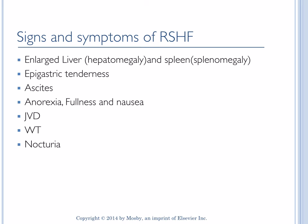JVD — jugular venous distension — occurs because blood backs up from the right side of the heart into the venous system and cannot empty into the right atrium, so it backs up into the jugular veins. There is also weight gain from fluid retention, and it is the nurse's responsibility to ensure daily weights are recorded. Nocturia occurs because of nocturnal fluid redistribution and reabsorption in the body during the night, causing the urge to void at night.